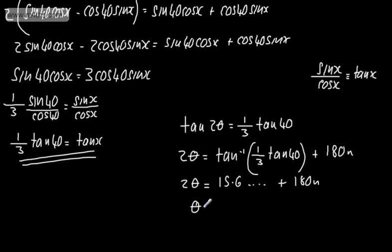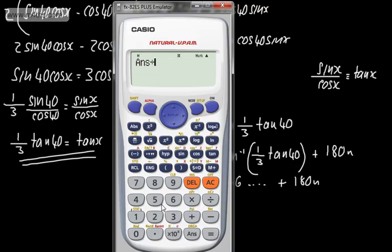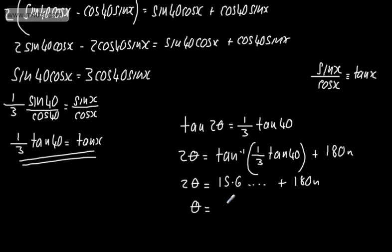We can say that θ equals half of this value. If we divide this by 2, that's going to give me 7.813 and so on, 7.813... plus now multiples of 90 degrees.